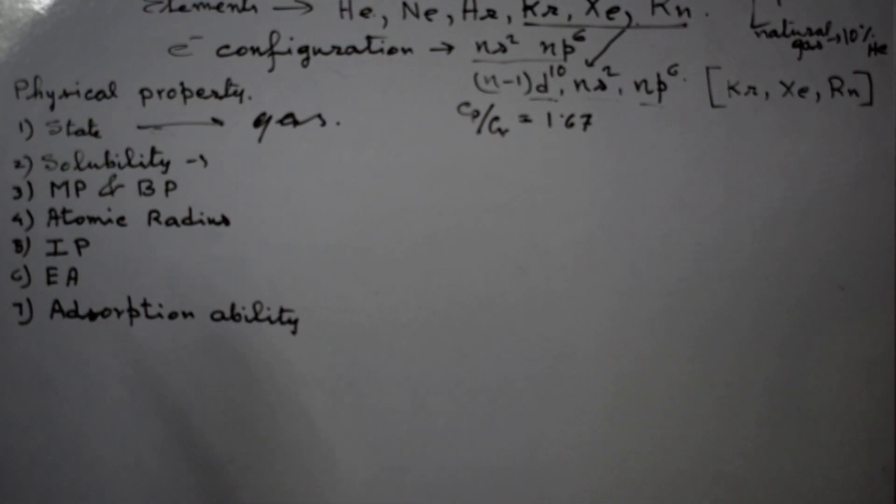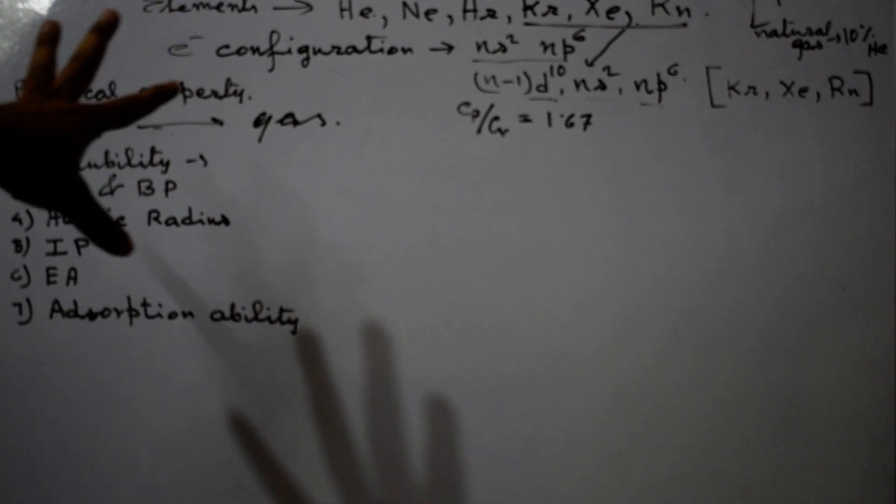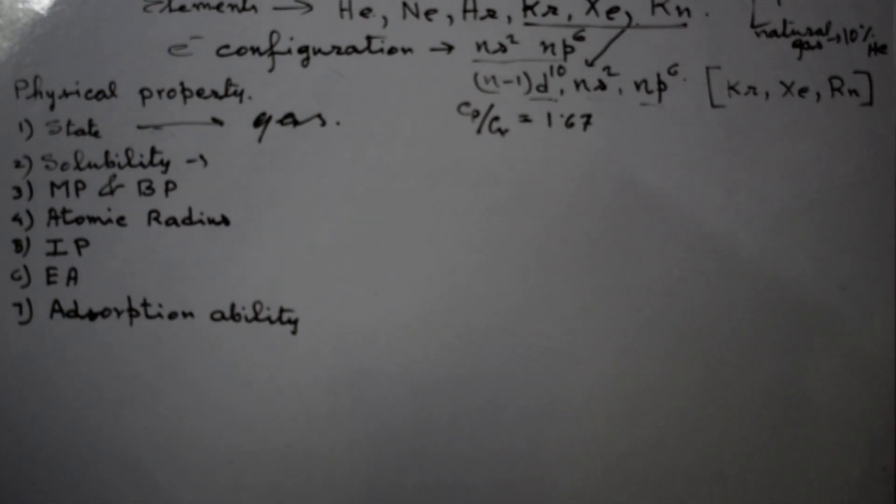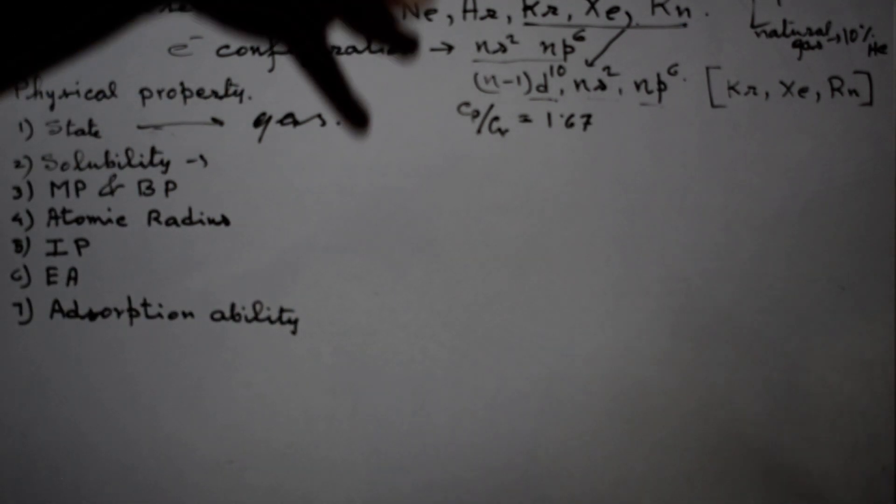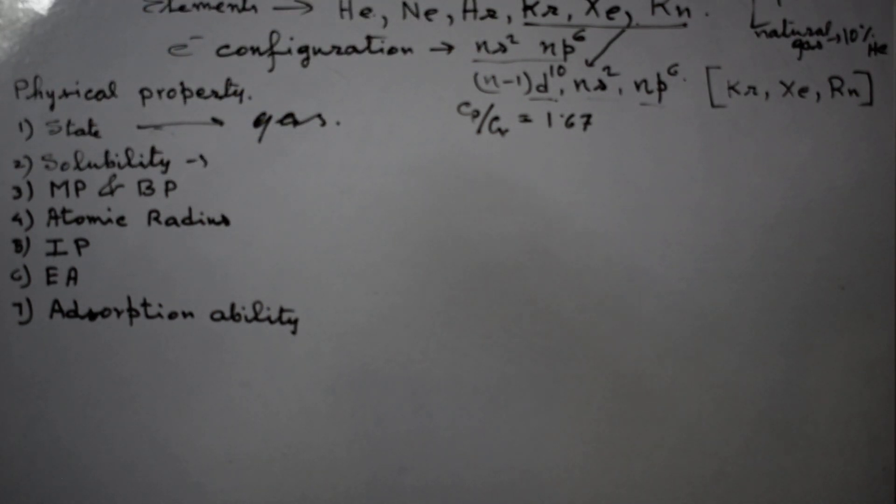Even radon has a high molecular weight. The nucleus has a huge amount of neutrons and protons—86 protons are there in radon—but still radon is gaseous. So the state is gaseous. Number two: solubility.